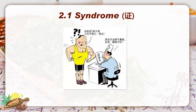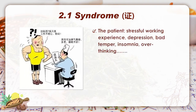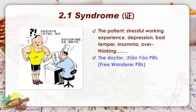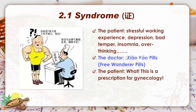First, we need to figure out what syndrome is. Let's look at this cartoon: a very strong man in a yellow t-shirt was seen by a doctor. The patient came because of stressful feelings at work, depression, bad temper, insomnia, and overthinking. After checking him, the doctor gave him a prescription — the herbal formula Xiao Yao pills. When the patient saw the prescription, he was enraged: 'This is a prescription for gynecology!'